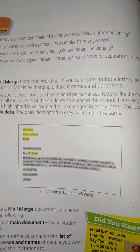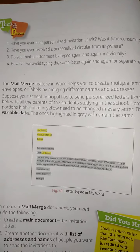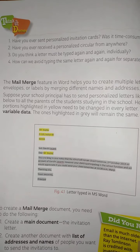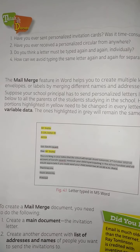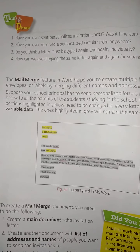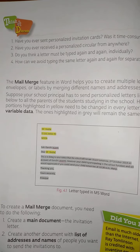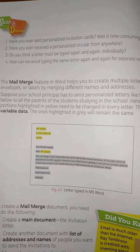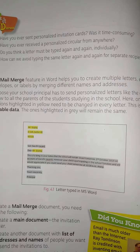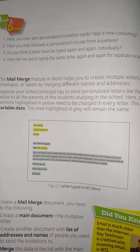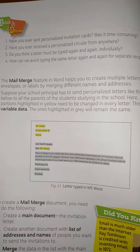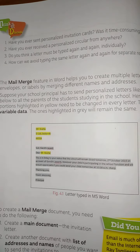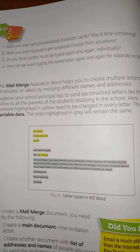The yellow highlighted data is called variable data — it changes in every letter. The portions highlighted in grey will remain the same in all letters.